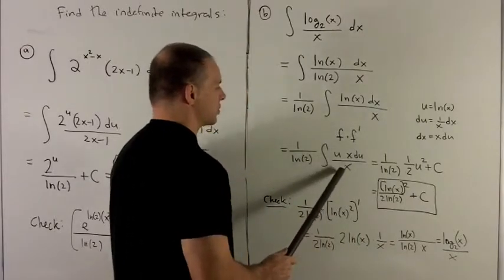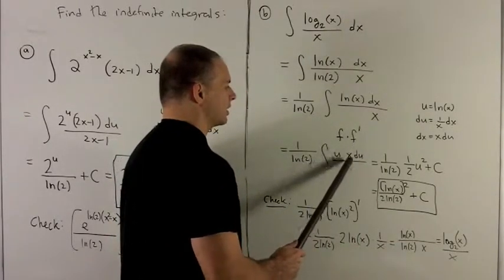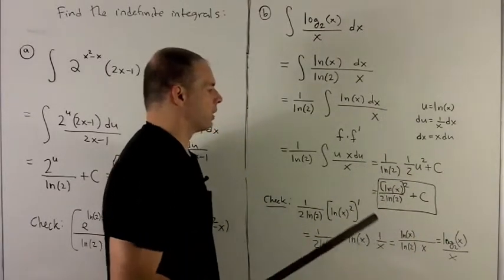We sub everything out. So we notice the x's go away. And then I'm left with u du. The integral of this is just going to be a half u squared plus c. And then we have our 1 over natural log of 2 out front.